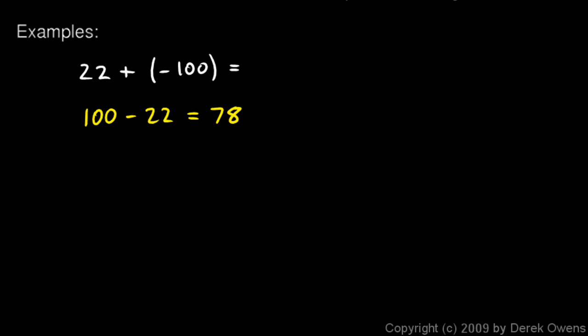And the 100 is larger than 22. And in my original numbers here, the 100 was negative. So I end up further to the left than I go to the right. Think of this as moving 100 to the left and only 22 to the right, so I end up 78 units away from 0. So my answer is negative 78.